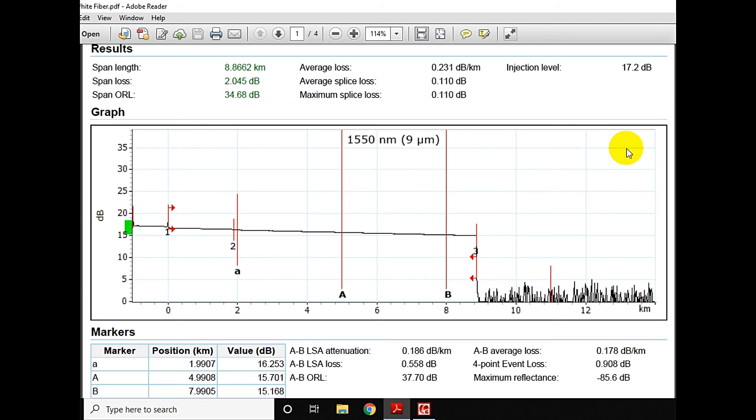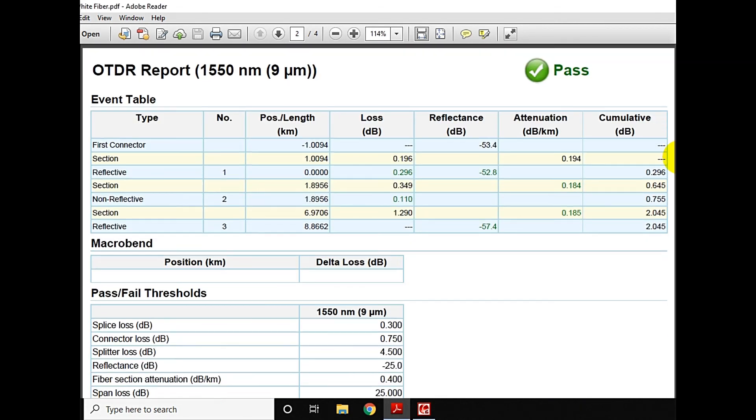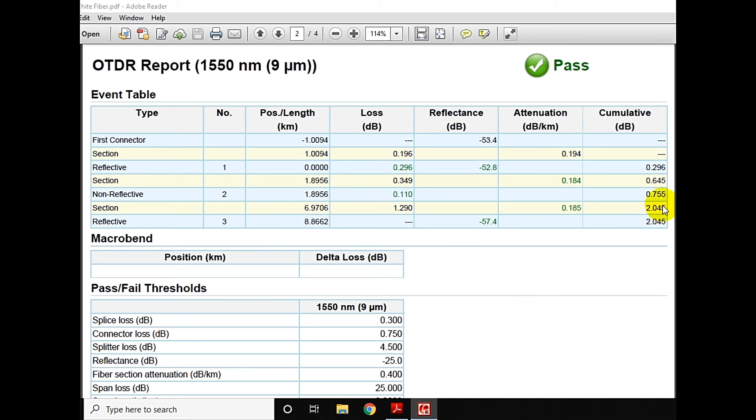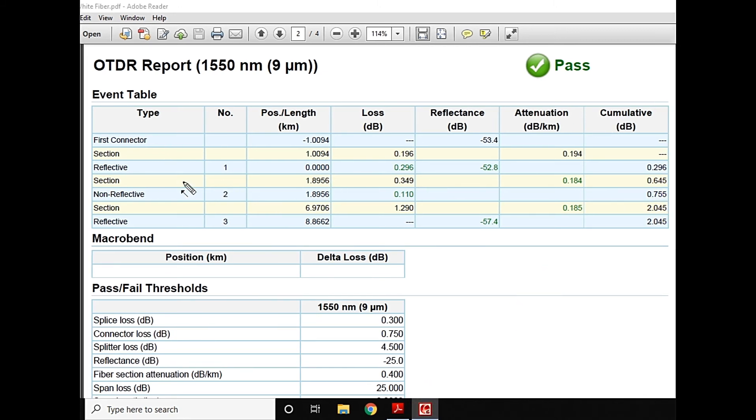This is the event table, friends. You can see the first connector is at minus 1.0094, because as I told you, the first one kilometer is going to be the launch cable. This is the port of the OTDR. Now we have a section of one kilometer which I told you is the launch cable. When we come towards the first reflective event at 0.00 kilometer, this is the port of our ODF where I'm receiving 0.296 dB loss and as well as reflection which is minus 52.8, which is not that bad.